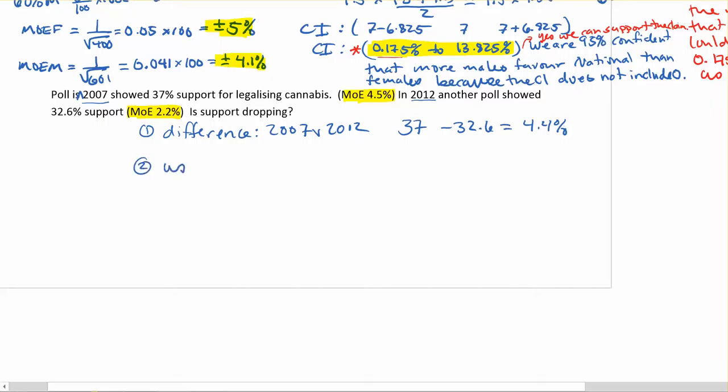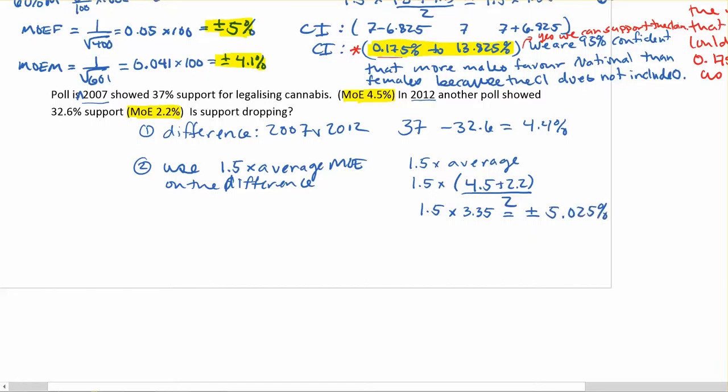Our second step is going to be to use 1.5 times the average MOE on the difference. So we need to find what our average MOE is. So 1.5 times the average. Again, that's going to be 1.5 times, in brackets, let's add the two together. 4.5 plus 2.2 in brackets and divide by 2. And if we do this, you can do it in one step or we can do it in two steps. The average is 3.35 times it by 1.5. And we're going to get a margin of error to use of plus or minus 5.025%.